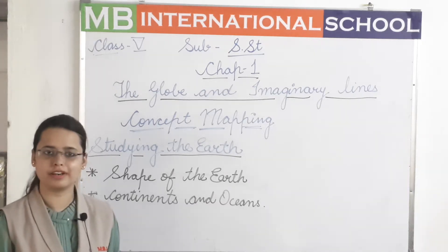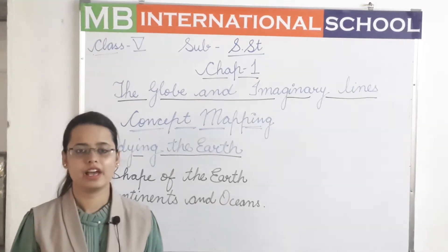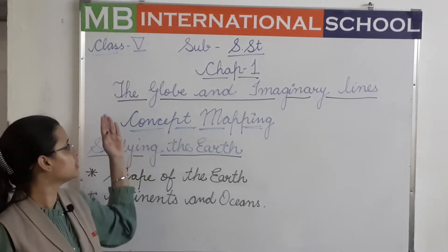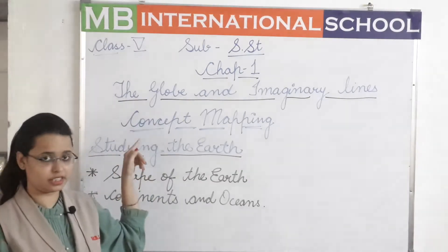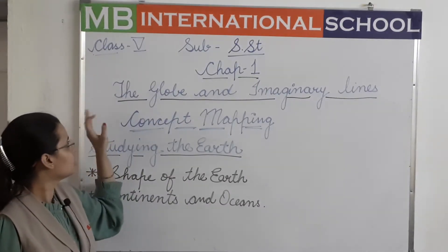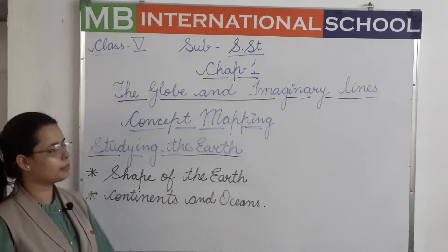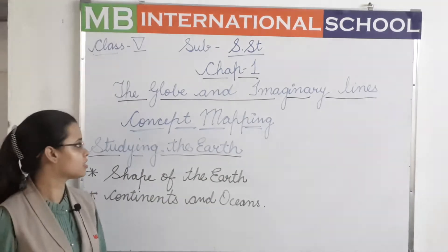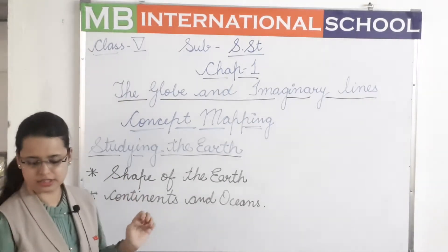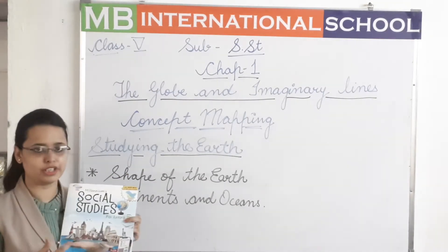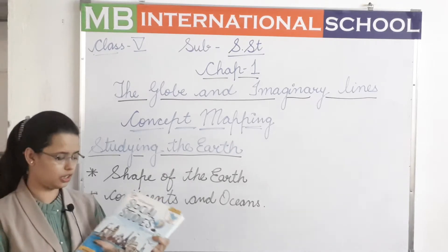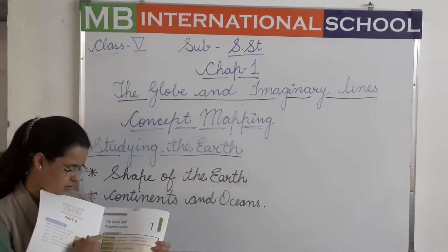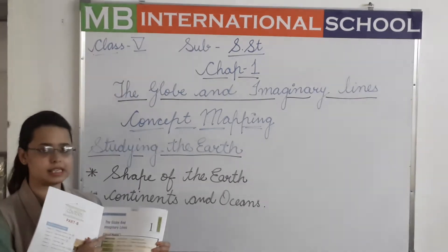Hello students, this is Apoorva from Ambient International School. Today we will discuss chapter number 1 in SST of class 5th. The topic is the globe and the imaginary lines. This is our first chapter of SST, and from the concept mapping in your book, we will start.